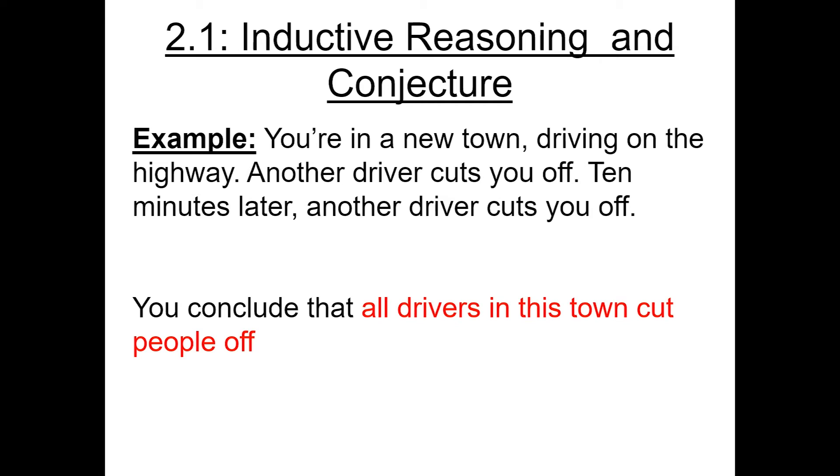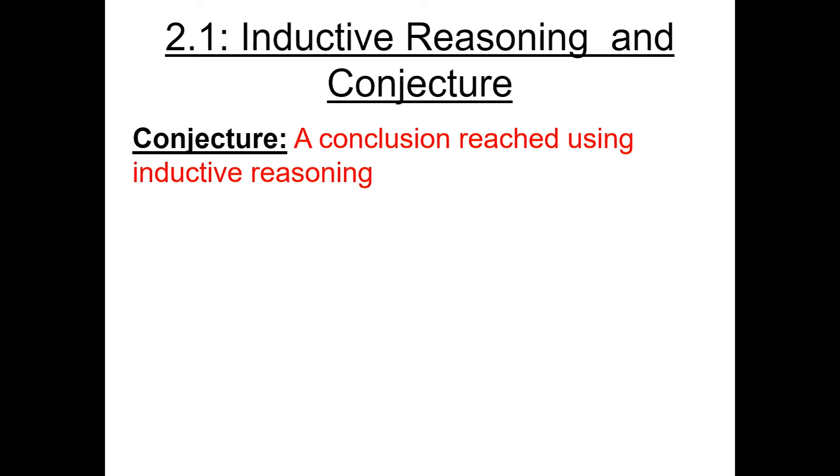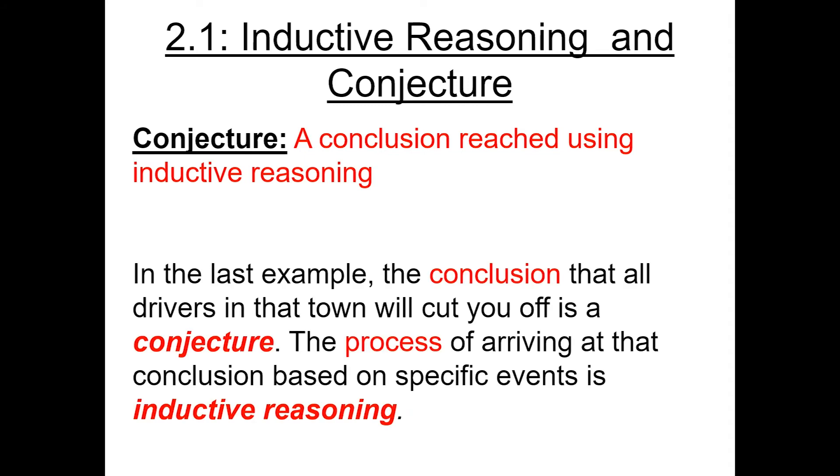So that conclusion you made is actually what we call a conjecture. Anytime you make a conjecture, this is the conclusion reached based on those finite events using that inductive reasoning. In that last example, the conclusion that all of the drivers are going to cut you off, that's what we call a conjecture. The process of arriving at that conclusion is what we call inductive reasoning. The conjecture is what we reach, how we get there is the inductive reasoning.